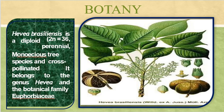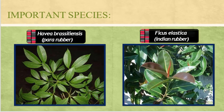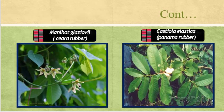In rubber there are different species. First is Hevea brasiliensis, commonly known as para rubber. Then Ficus elastica, Indian rubber. Manihot glaziovii, Ceara rubber. Castilla elastica, Panama rubber. These are the different species of rubber, but the most commonly cultivated species is Hevea brasiliensis.